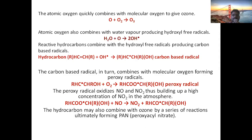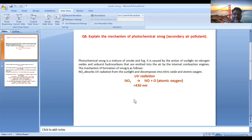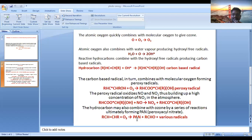The hydrocarbon may also combine with ozone by a series of reactions, ultimately forming peroxy acyl nitrate by the following equation: RCH + O3 finally forms peroxy acyl nitrate along with various radicals. This peroxy acyl nitrate causes eye irritation in the atmosphere.